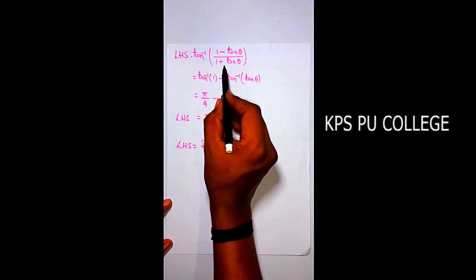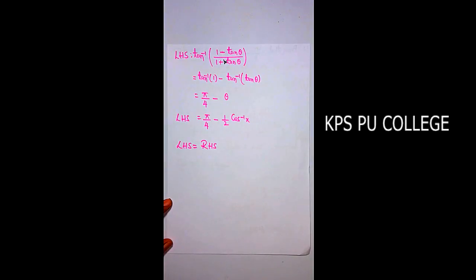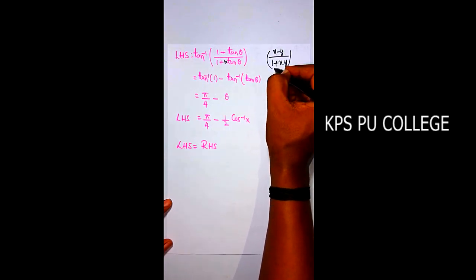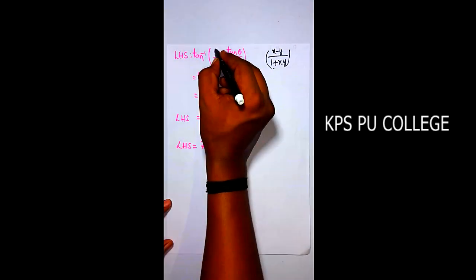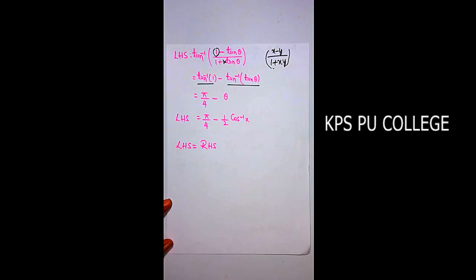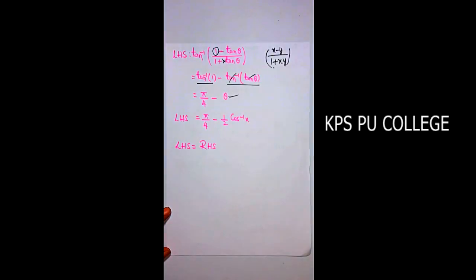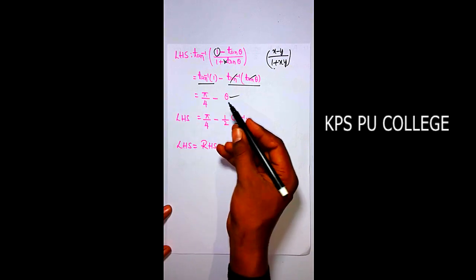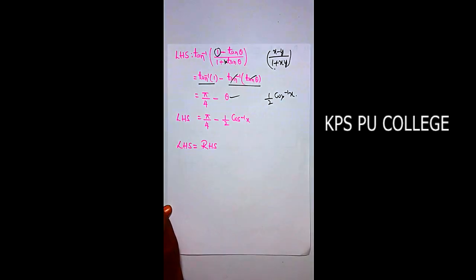Using the formula tan⁻¹(x) - tan⁻¹(y) = tan⁻¹((x-y)/(1+xy)), this is tan⁻¹(1) - tan⁻¹(tanθ). tan⁻¹(tanθ) = θ and tan⁻¹(1) = π/4, so LHS = π/4 - θ = π/4 - ½cos⁻¹(x) = RHS. Result proved.